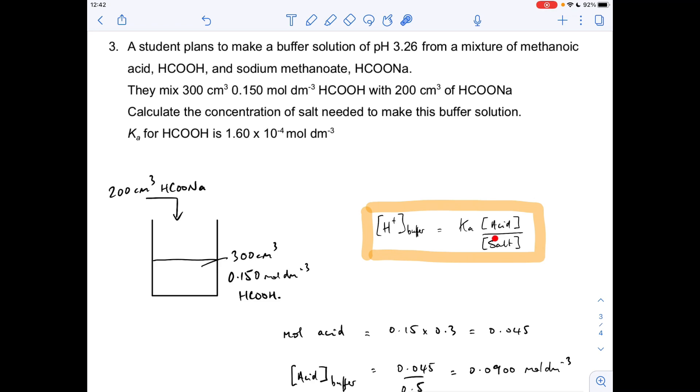We're going to calculate the concentration of the salt, but that's going to be the concentration of the salt in the buffer solution, and then we'll work backwards to get what the original concentration of salt needed to be. Okay, so the first thing we'll do is work out, well, how many moles of acid have come from this methanoic acid: concentration times volume, 0.045.